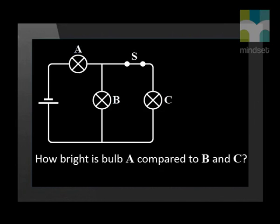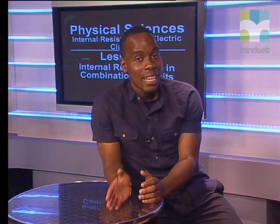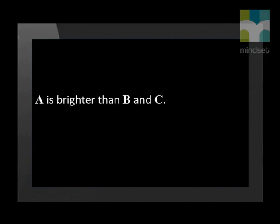How bright is bulb A compared to B and C? B and C are connected in parallel, so they share the current equally, since the bulbs are identical and have the same resistance. A is connected in series, so all the current flows through it. Therefore, A is brighter than B and C. B and C are equally bright.